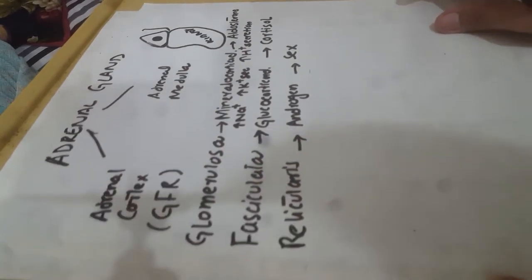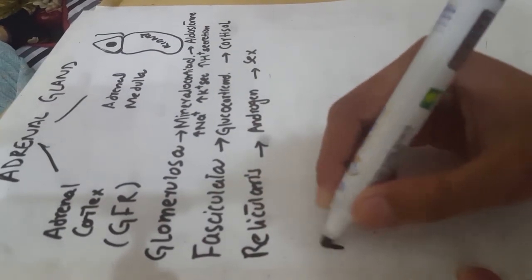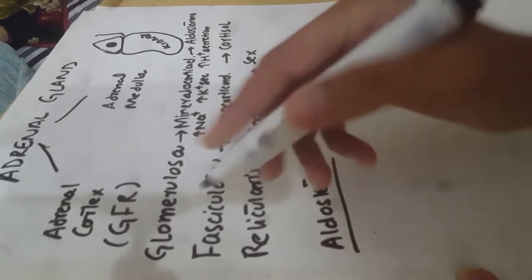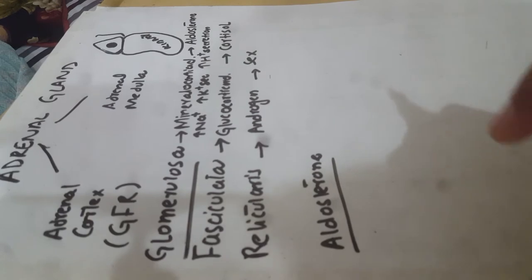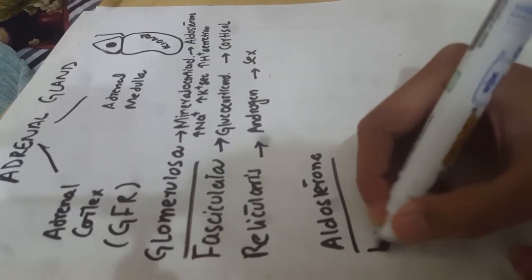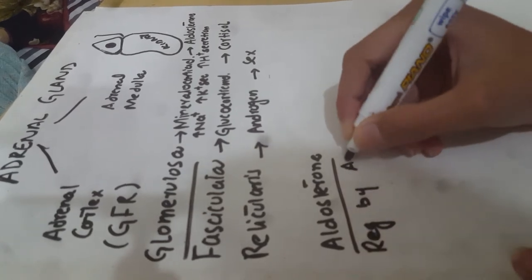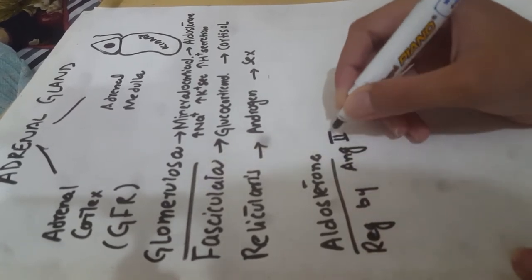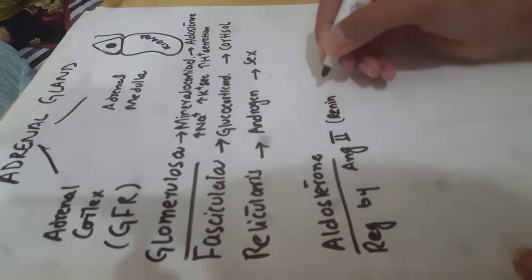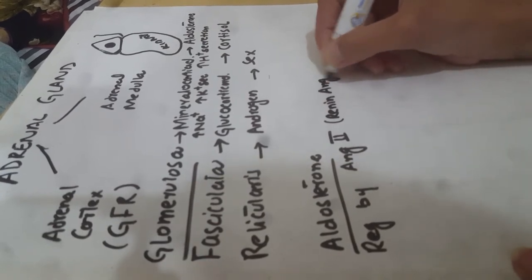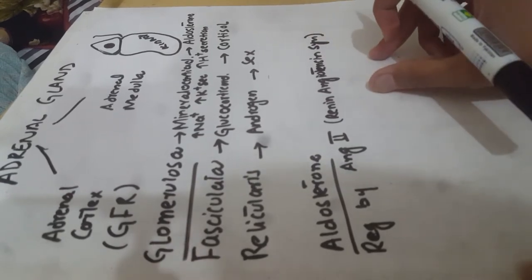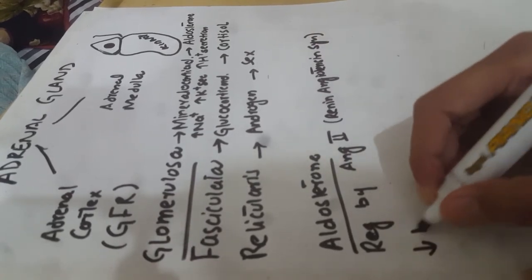Now we'll study the function of aldosterone in detail. Aldosterone is secreted by zona glomerulosa and is regulated by angiotensin 2, which is part of the renin-angiotensin system.